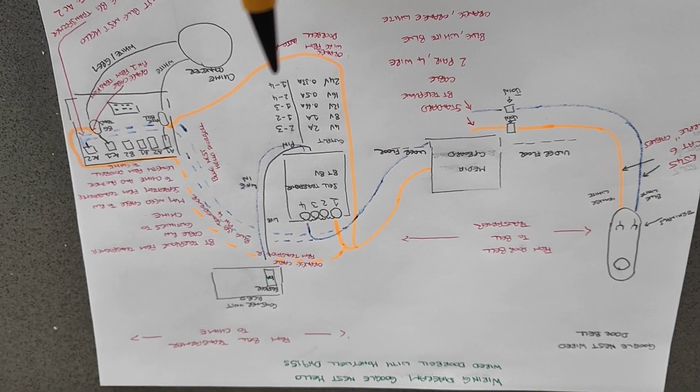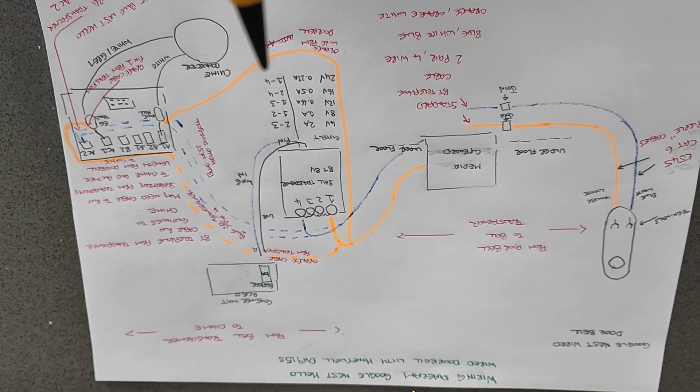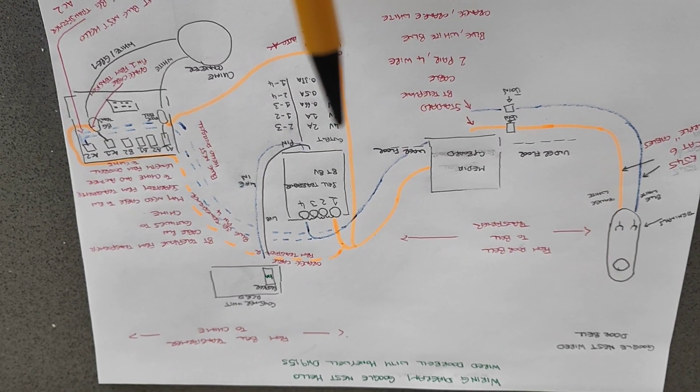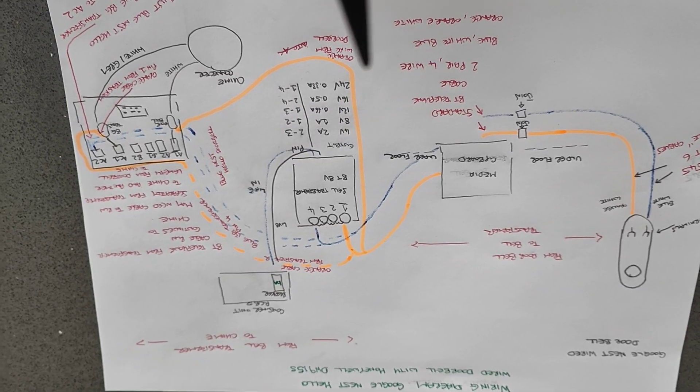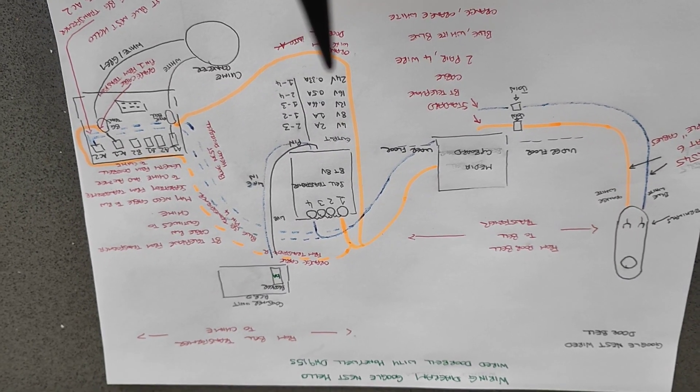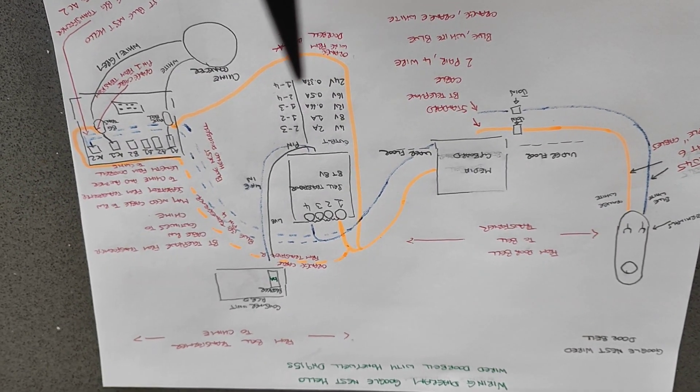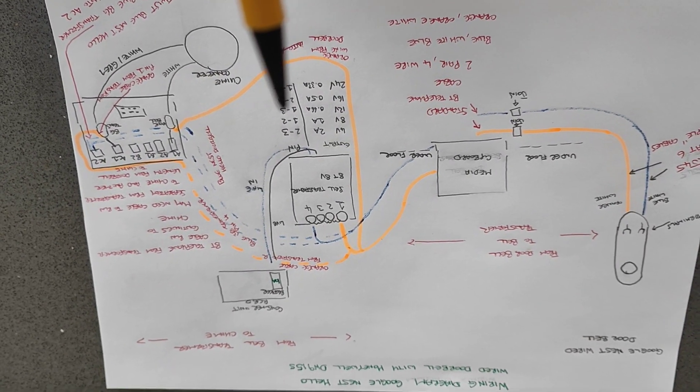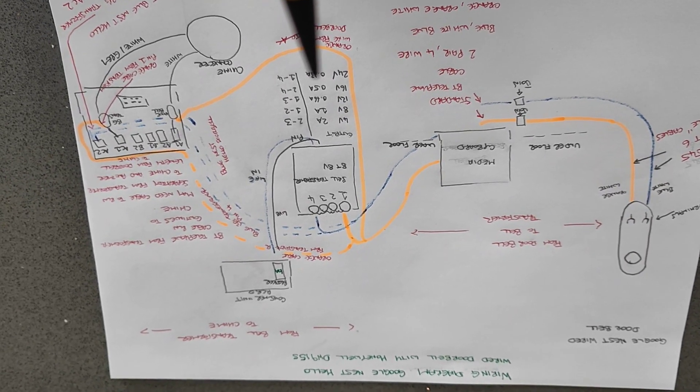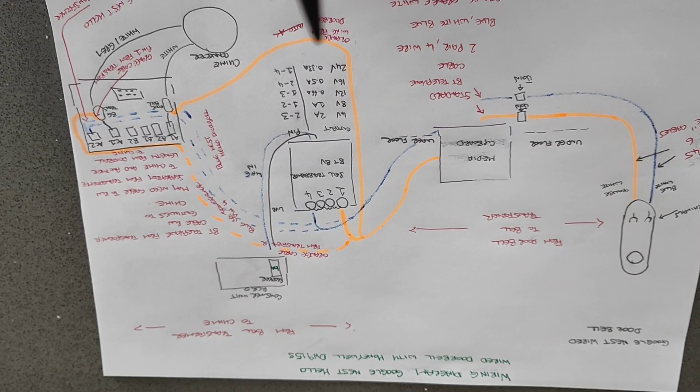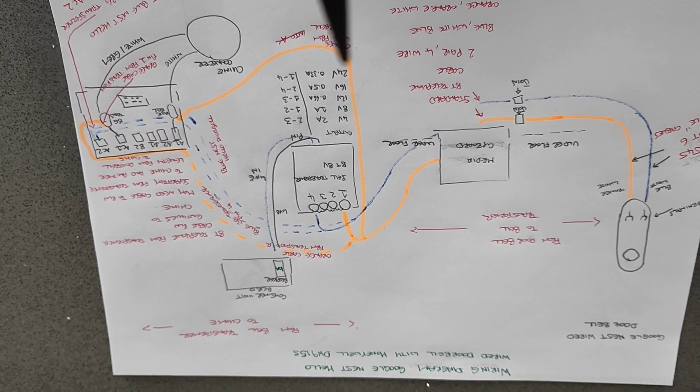Now if we look here, pin one to pin four gives me a zero volt to 24 volt. Now you could arguably get this to work with a zero volt to 8 volt, so pins one and two, because the Honeywell chime actually says that it works on an 8 volt connection, but this is between zero to 24 volts. So that's how I've got it actually to work.